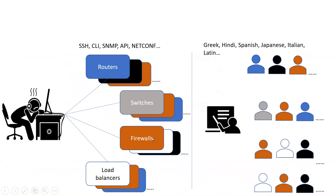Let us consider a network with many routers, switches, firewalls, and load balancers from different vendors. It is very common for businesses to go for a multi-vendor approach to get a competitive advantage. You can imagine the plight of a network administrator to configure and monitor these devices. This can be compared to an international classroom where a teacher is trying to teach students from different origins — students who speak only Greek, Spanish, Hindi, Italian, Japanese, and Latin. The teacher has to know all the different languages and dialects and repeat the lessons to each of these students. In the moment a student of a different origin joins, the teacher must know that language or dialect to teach the new student. This is exactly what a network administrator must go through when dealing with multi-vendor, multi-platform networks.